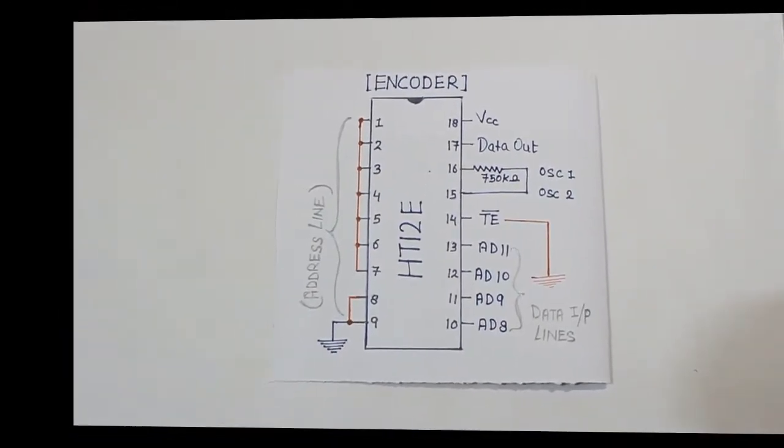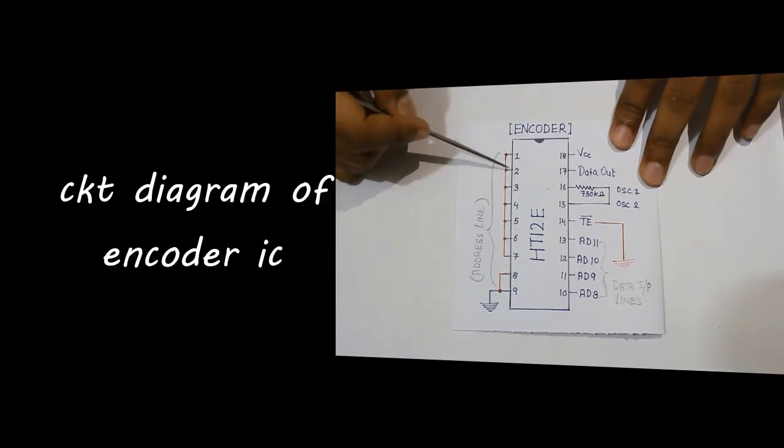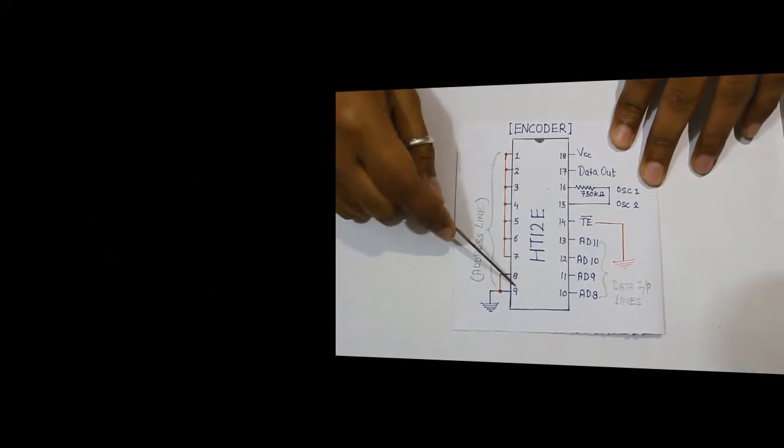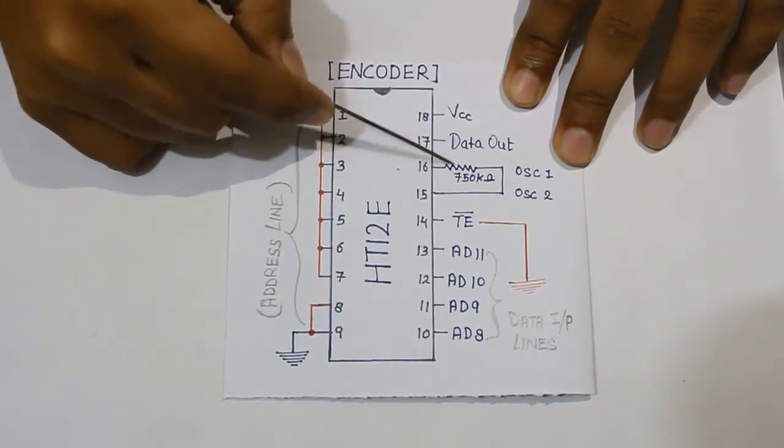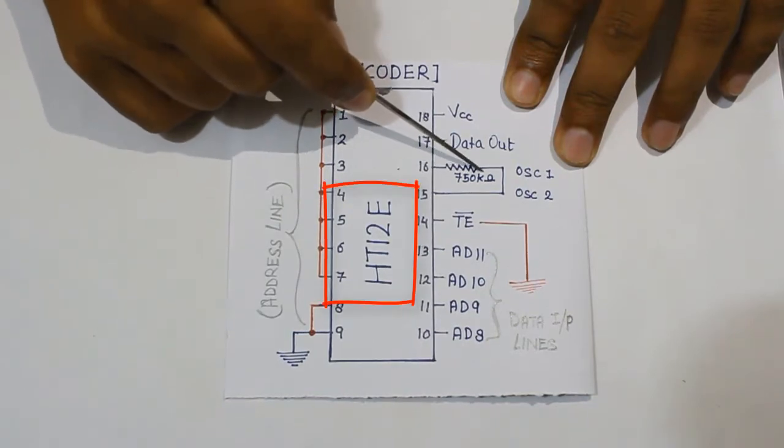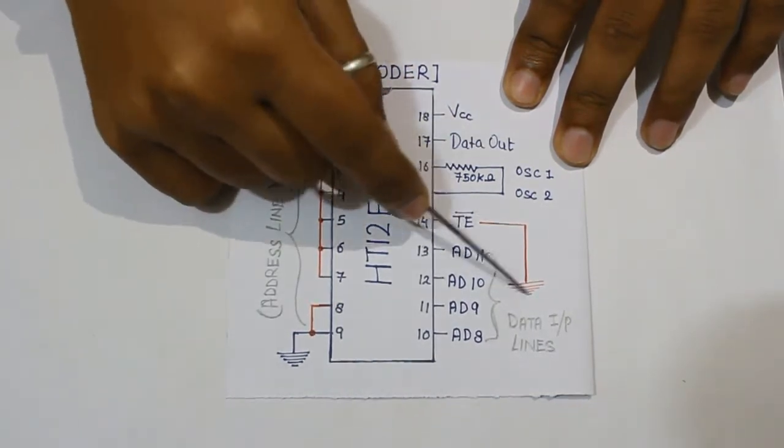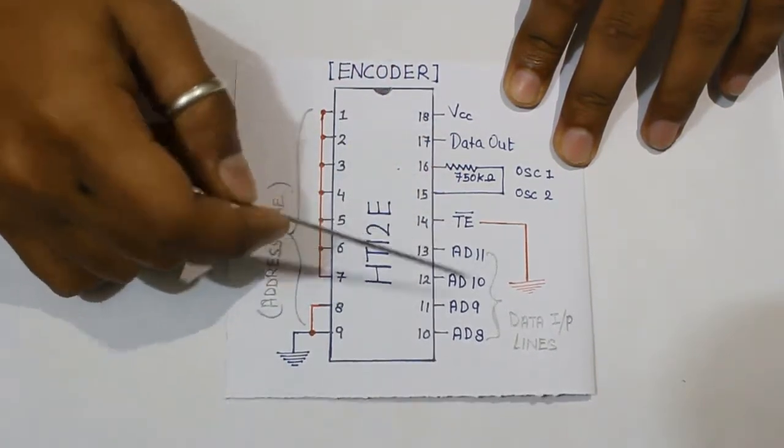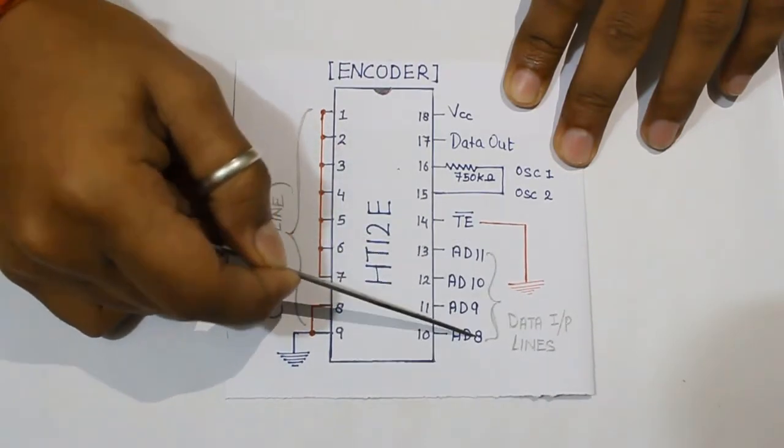Firstly, I am going to explain you about the pin configuration of encoder IC. You can see here these are the address lines from 1 to 7, 8, 9 are connected to ground. 18th is our VCC, 17th is data out, 16th and 15th are our oscillator, 15th is our TE that will be connected to the ground, and from pin 13th to 10th, these are my data input lines, means in these pins I am going to give my data input.